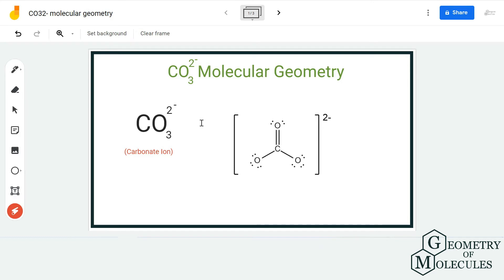This is the Lewis structure of CO3 2- ion, in which the carbon atom is forming two single bonds with two oxygen atoms and a double bond with one oxygen atom. The structure is quite simple.